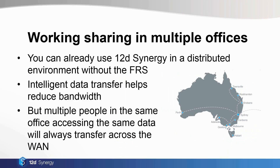You can already use 12D Synergy to work share in a distributed environment without using the FRS. So if you have offices in Brisbane, Sydney, and Melbourne, your users can still access data from any of those offices. Our intelligent data transfer tools help reduce the bandwidth significantly by only delivering the changes that people need. However, if multiple people in the same office are accessing the same data, they're all going to be delivered the same change. So if you've got five people in your Brisbane office opening the same version of the same 12D model project, they're all going to get a copy of the changes the first time, and these changes could be large.